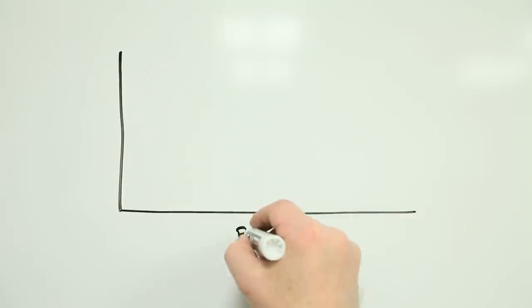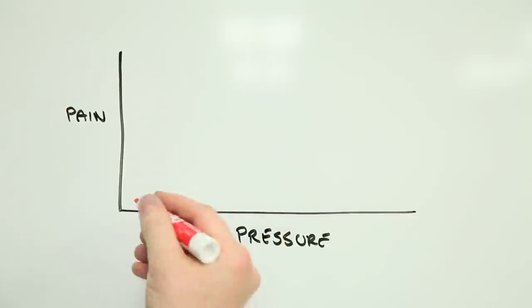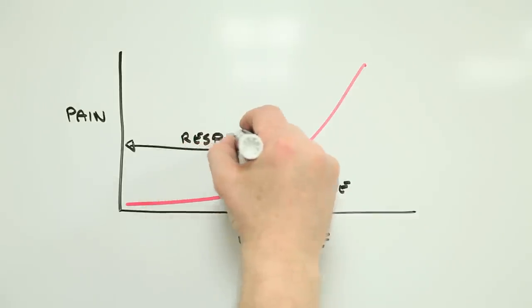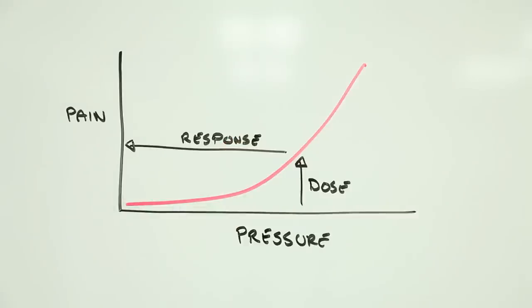The dose is the amount of pressure you put on your earlobe. And the response is the pain you feel. The greater the pressure, the greater the response.